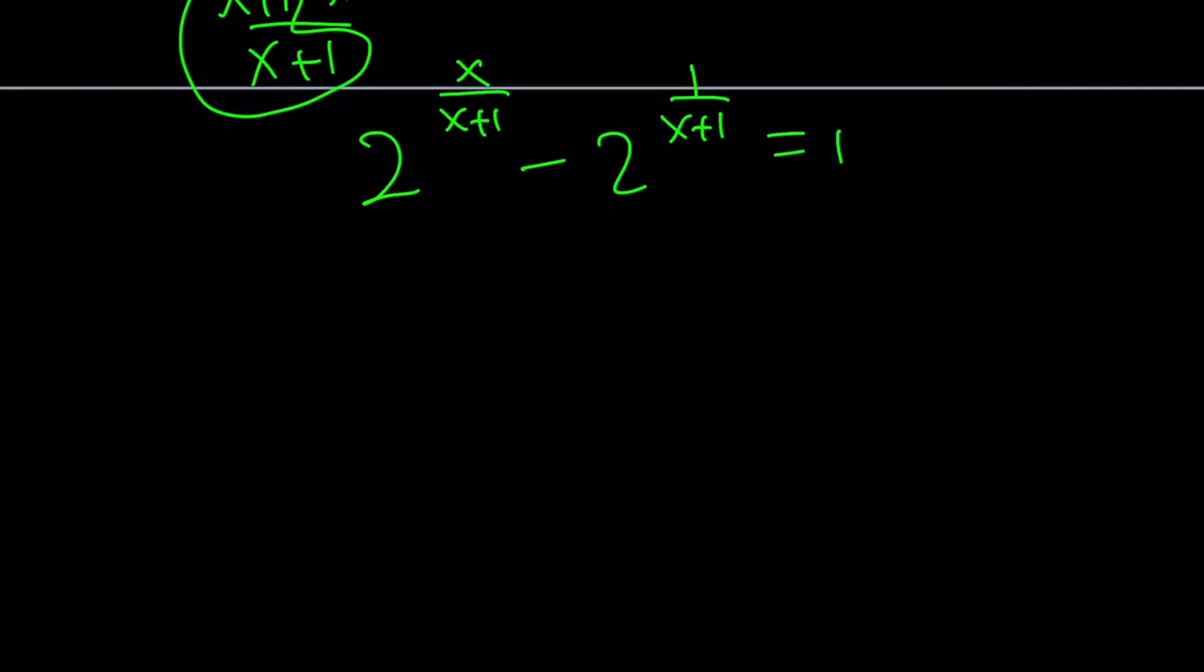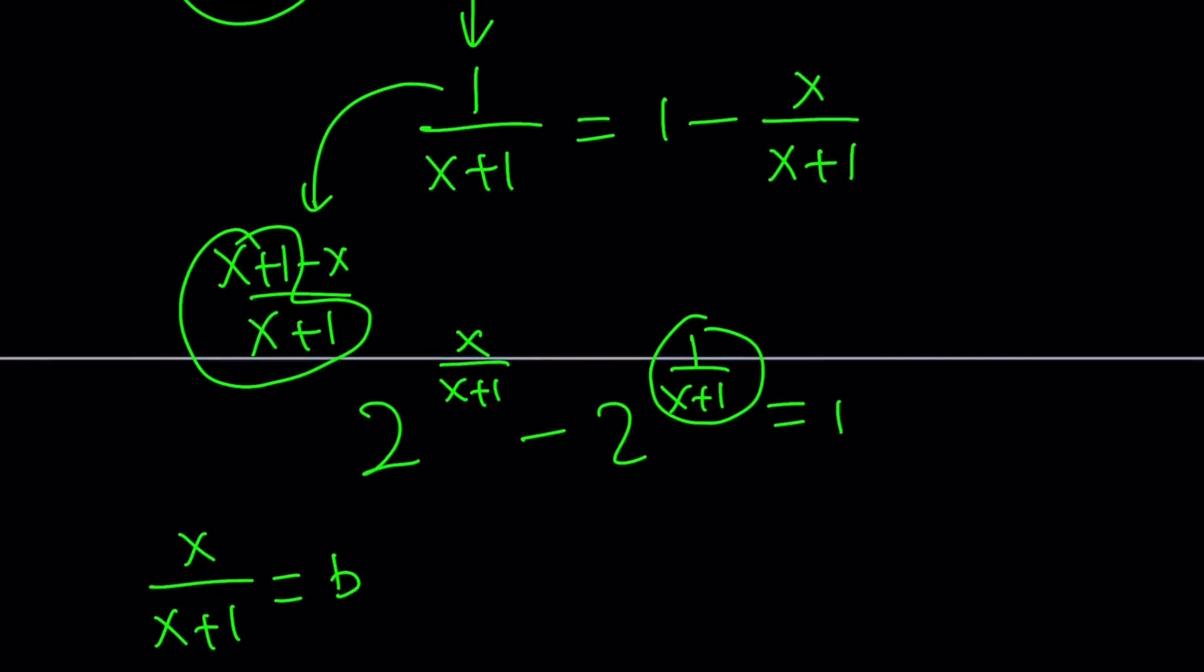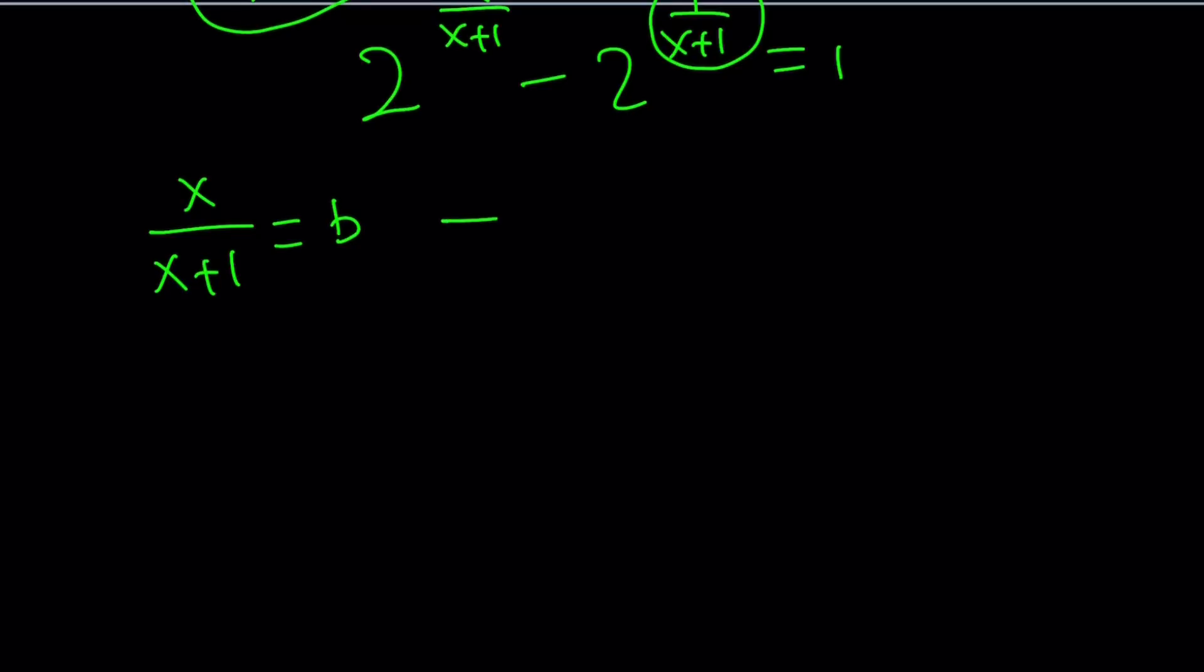So what am I going to do? I'm going to replace x over x plus 1 with something, how about b? Maybe we're going to find something like b to be or not to be. From here, we get the following: since this was 1 minus x over x plus 1, 1 over x plus 1 is just going to be 1 minus b. So now we get 2 to the power b minus 2 to the power 1 minus b equals 1.